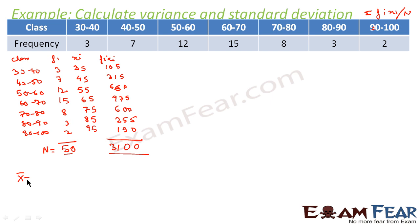Mean is summation of fi xi by n, which is 3100 divided by 50, and this value comes out to be 62. So mean equals 62.